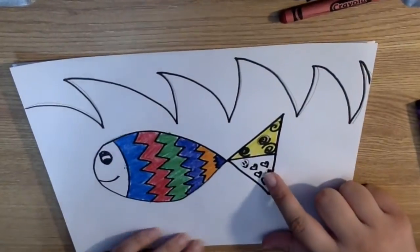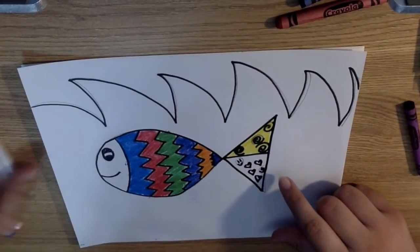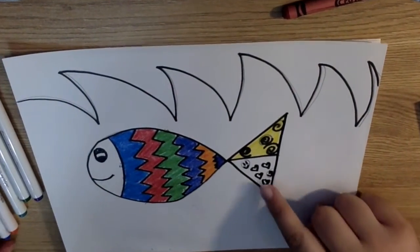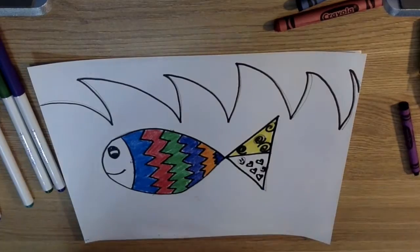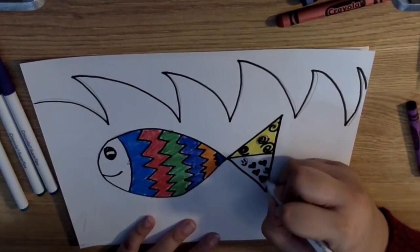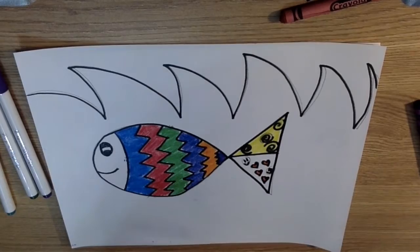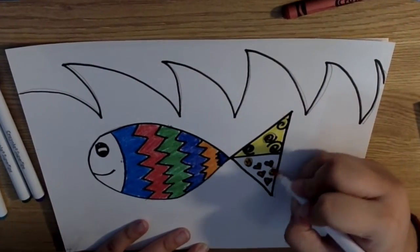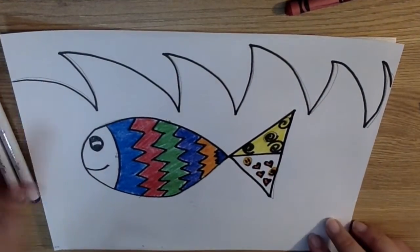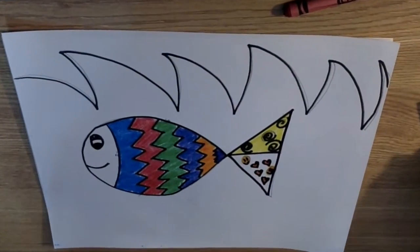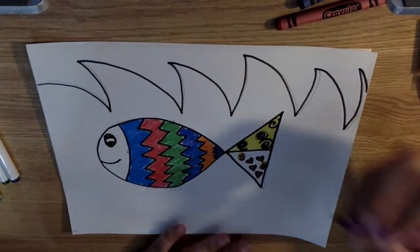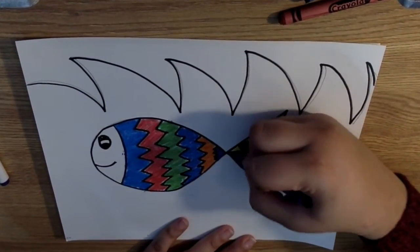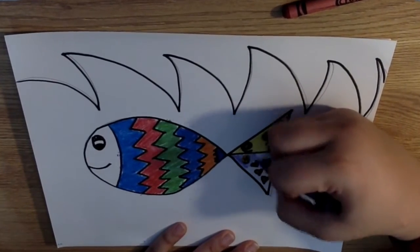And because I have markers, I'll take my markers and I'll color in my hearts in here. And take my favorite color of the rainbow, which is purple. And I'll color the bottom of the fish tail and make it purple.